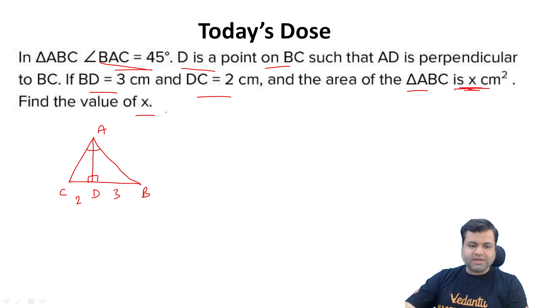If we get height, if we get the value of AD, angle CAD if we consider theta, then this angle should be 45 minus theta. So to make the equation, 2 upon m should be tan theta, and similarly 3 upon m should be tangent of 45 minus theta.